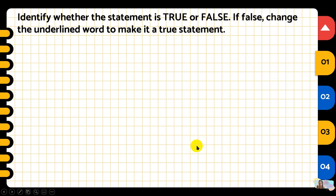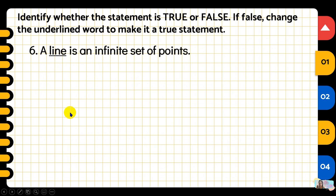Number six: a line is an infinite set of points. The underlined word is 'line.' Is this true or false? The answer is true.